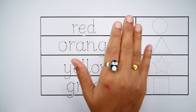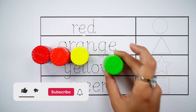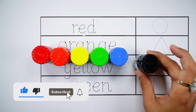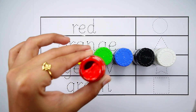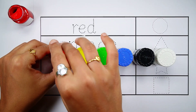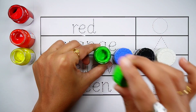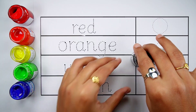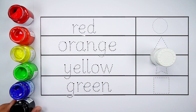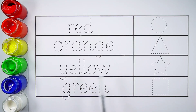Hello! Red colour, Orange colour, Yellow colour, Green colour, Blue colour, Black colour, White colour. Let's learn some colours and shapes.